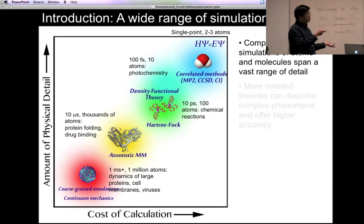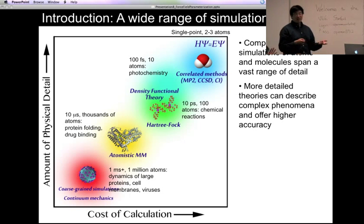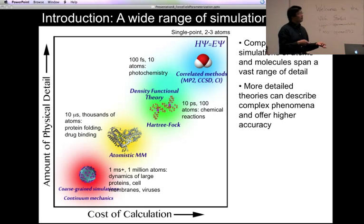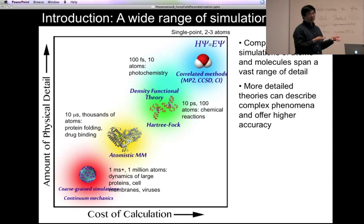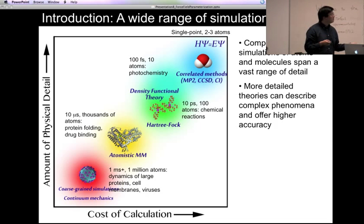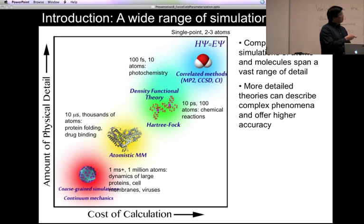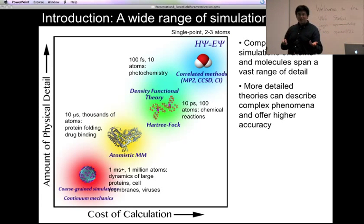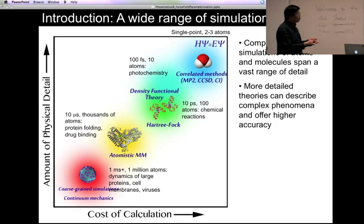If you go to a higher level of detail, you have methods that treat the electrons explicitly, like the Hartree-Fock method or density functional theory, which are all approximations to Schrödinger's equation, which can only be solved for systems that contain one electron. In general, the more physical detail you include into your simulation, the more costly the simulation is going to be.